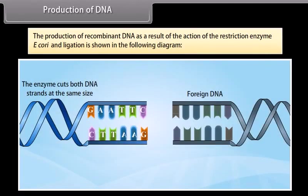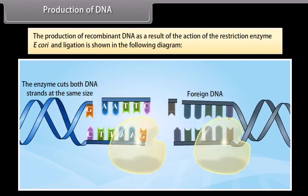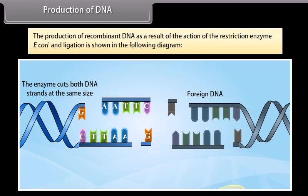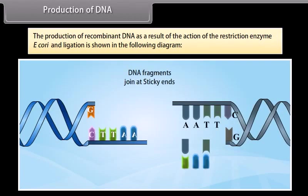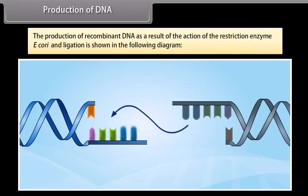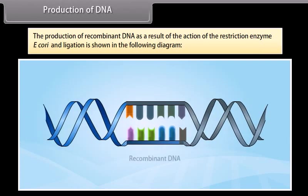The production of recombinant DNA as a result of the action of the restriction enzyme EcoRI and ligation is shown in the following diagram. The enzymes cut both DNA at the same site. After that, both DNA fragments can be joined at the sticky ends and the result is a recombinant DNA.